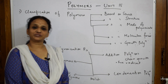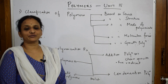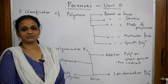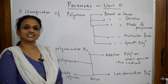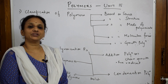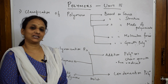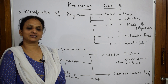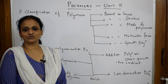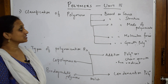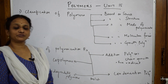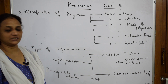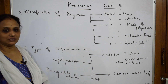Let us come back and finish the last chapter of your grade 12 syllabus — that is polymers, the easiest chapter. Even if you're not prepared, in just one week you can finish this chapter. This is part of your Part 2 book, Unit 15. Let's see the index of what we are going to learn.